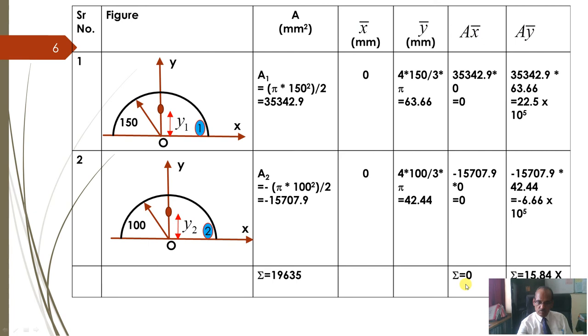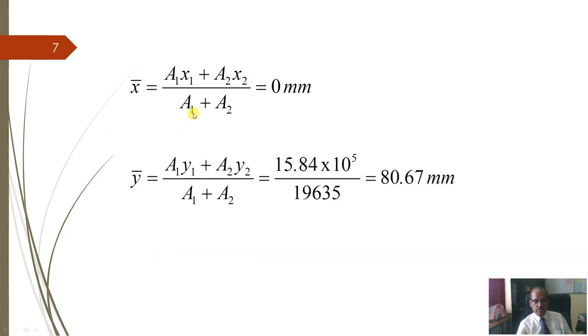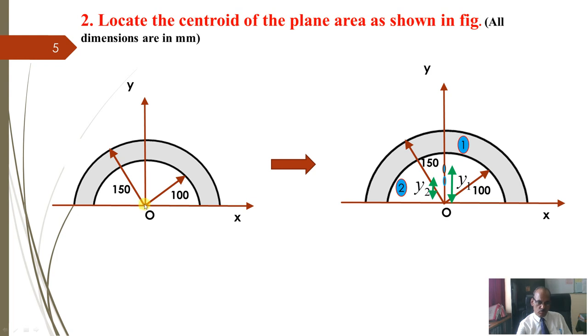Why we got Ax is 0? Because figure is symmetrical about y-axis, x-coordinate will be 0 and that is why it is 0. So, that, there is no need actually to calculate this. Just, if you observe the figure carefully, it is symmetrical about y-axis, there is no need to calculate x-coordinate, it is 0. Because centroid lies on the y-axis, centroid for both figures it lies on the y-axis. So, x-coordinate is 0 and y-coordinate, if you take a1 y1 plus a2 y2, we have calculated in the previous slide, that is 15.84 into 10 raised to 5. So, centroid lies on y-axis from origin at a distance of 85.67.